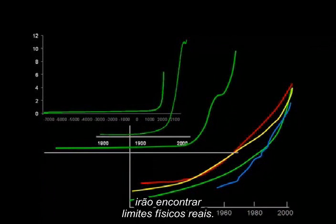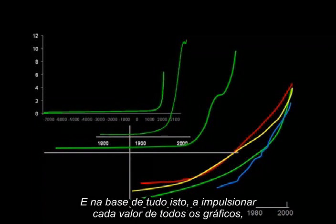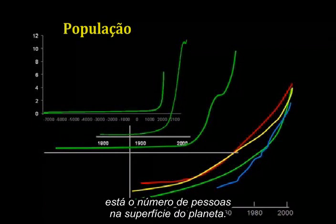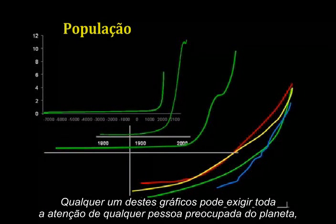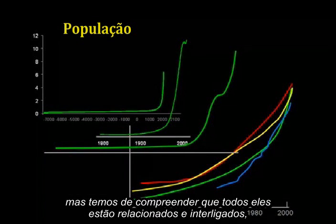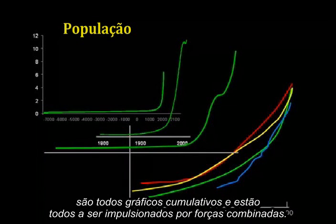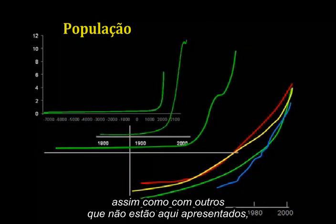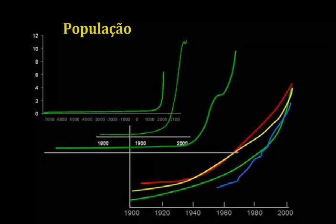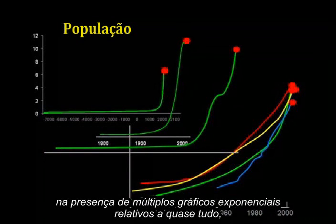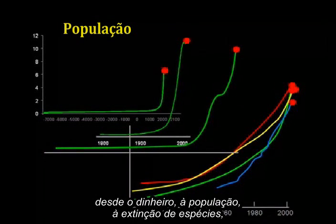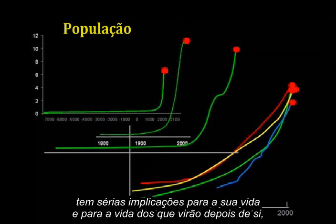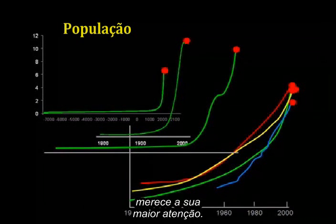And behind all of this, driving every bit of every graph, is the number of people on the surface of the planet. Taken one at a time, any one of these charts could command the full attention of every earnest person on the face of the planet. But we need to understand that they are, in fact, all related and interconnected. They are all compound graphs and they are all being driven by compounding forces. To try and solve one, you'd need to understand how it relates to the others, as well as others not displayed here, because they all intersect and overlap. The fact that you live in the presence of multiple exponential graphs relating to everything from money to population to species extinction has powerful implications for your life and the lives of those who will follow you. It deserves your very highest attention.